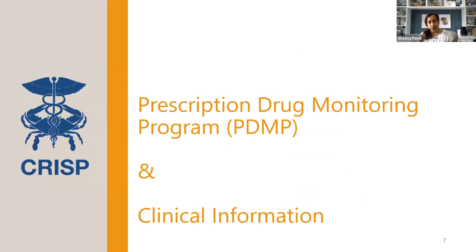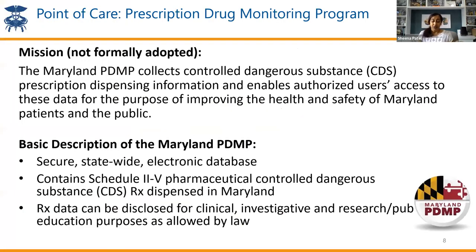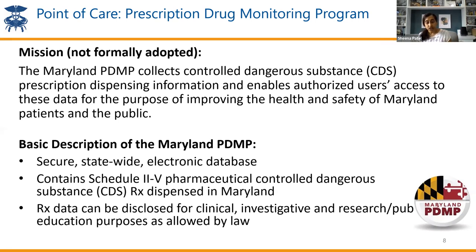Getting into the nitty gritty, I'll go through some of these services and show you screenshots of what they look like. Probably our most popular program and required by the state is the prescription drug monitoring program, or PDMP. This program was meant to combat the opioid epidemic in Maryland. CRISP is the administrator of that program, supporting a statewide secure electronic database containing schedule two through five medications dispensed in the state of Maryland. You're also able to view interstate data through data sharing agreements, so if a patient went to DC or Virginia to fill a prescription for controlled substances, you can get that information.